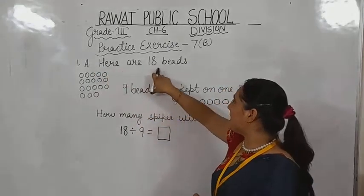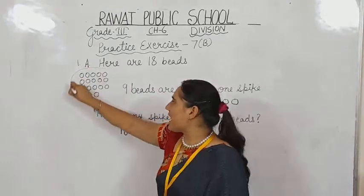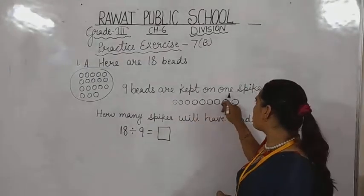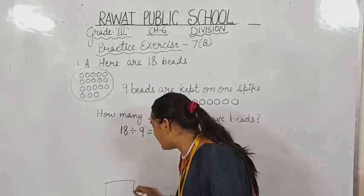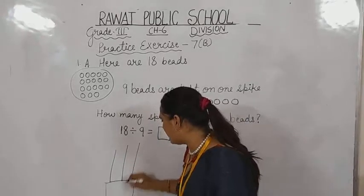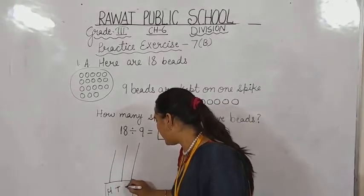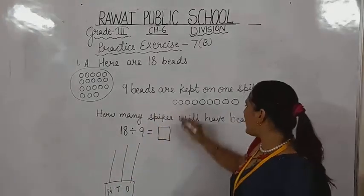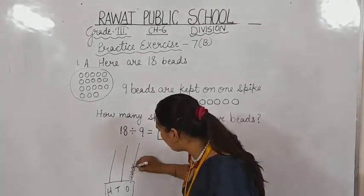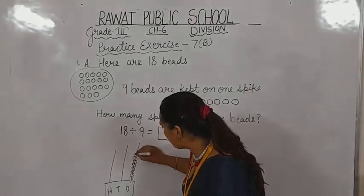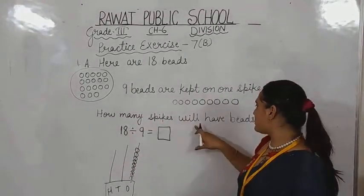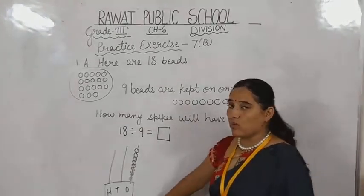In this question, there are 18 beads totally — we have 18 beads with us — and 9 beads are kept on one spike. This is what we call the spike, shown on the hundreds, tens and ones frame. He said nine beads on one spike, so we are going to draw one, two, three, four, five, six, seven, eight, nine.